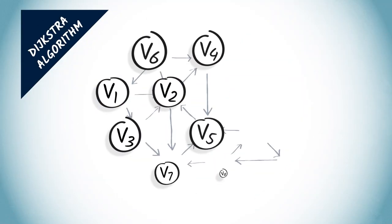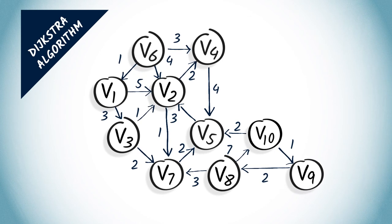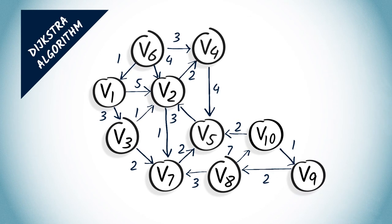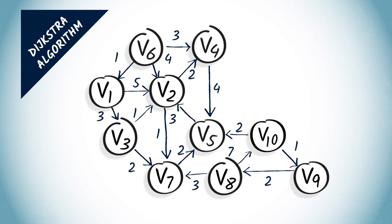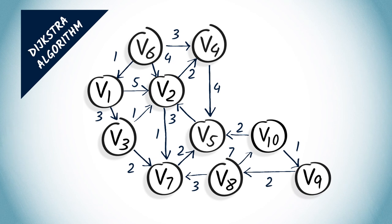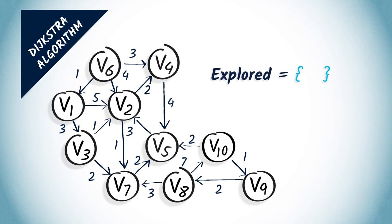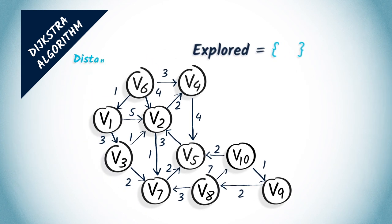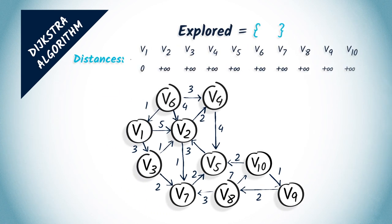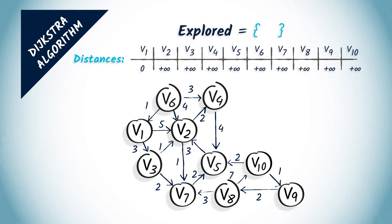Let us describe more precisely how Dijkstra's algorithm works using the following example. We are going to build a minimum spanning tree starting from vertex v1 in this graph. So, we initialize two data structures. First, the set of explored vertices, which are initially empty. And second, the array of distances from v1 to the other vertices in the graph, initialized to infinity everywhere but v1, where we insert a 0.